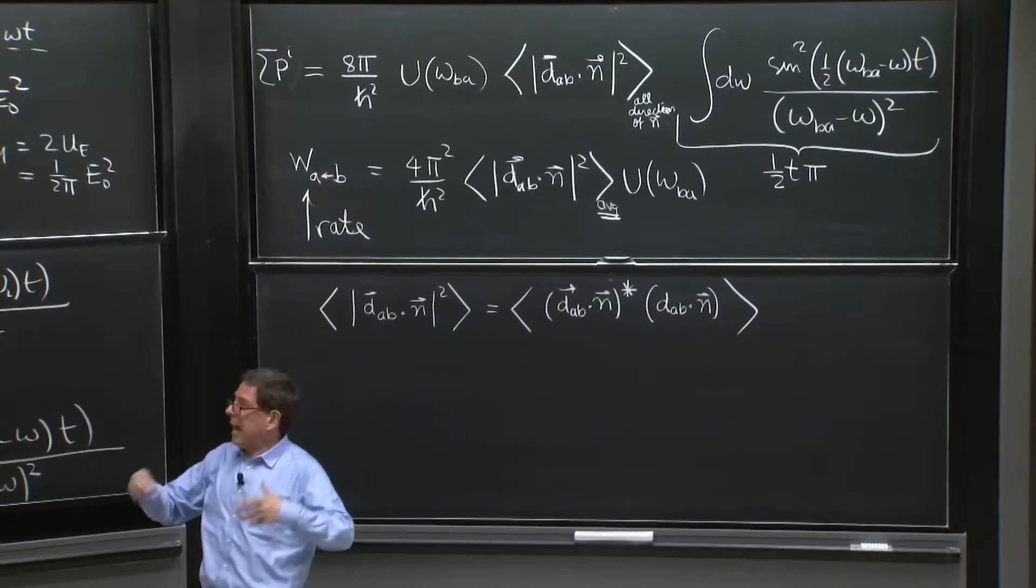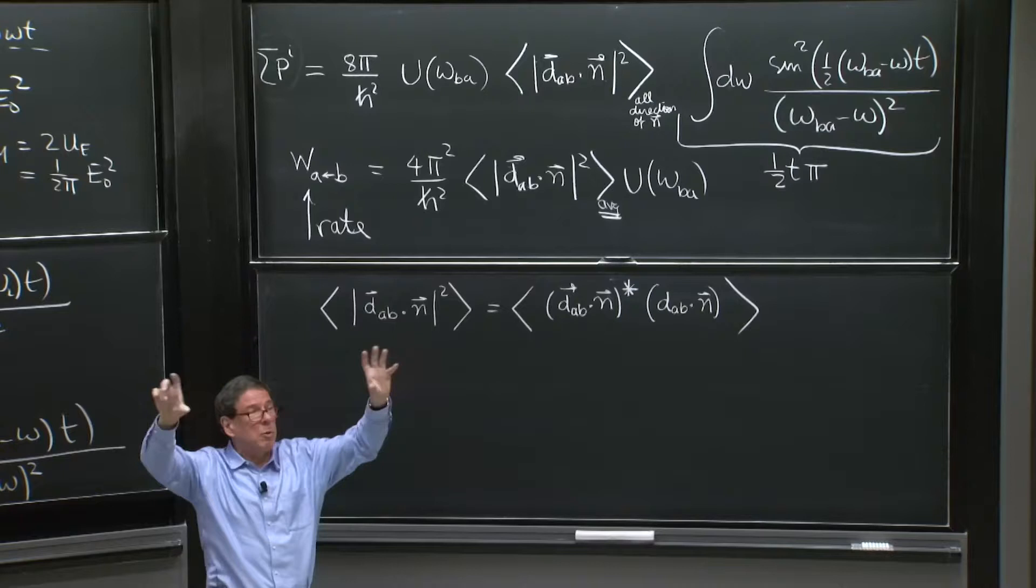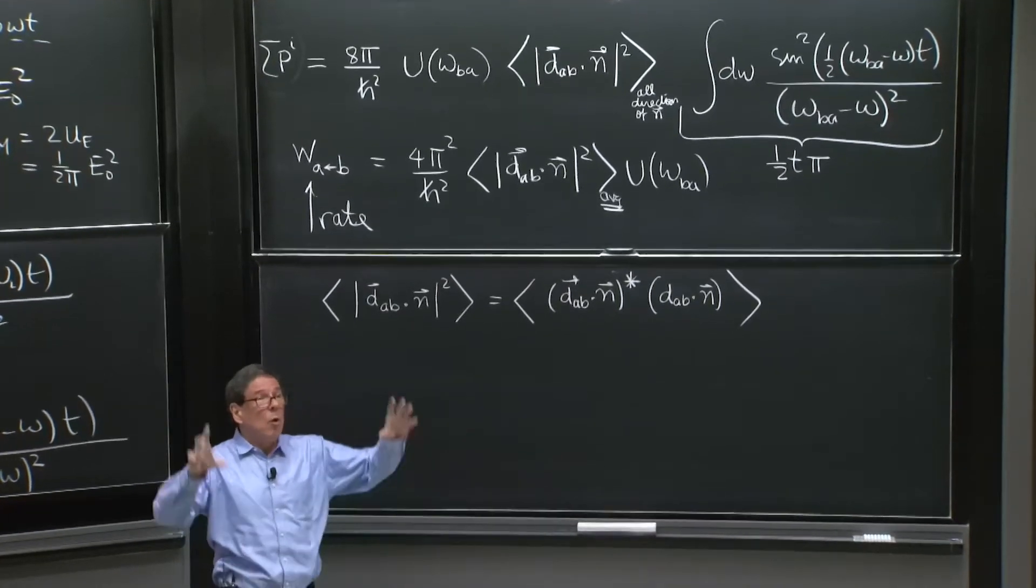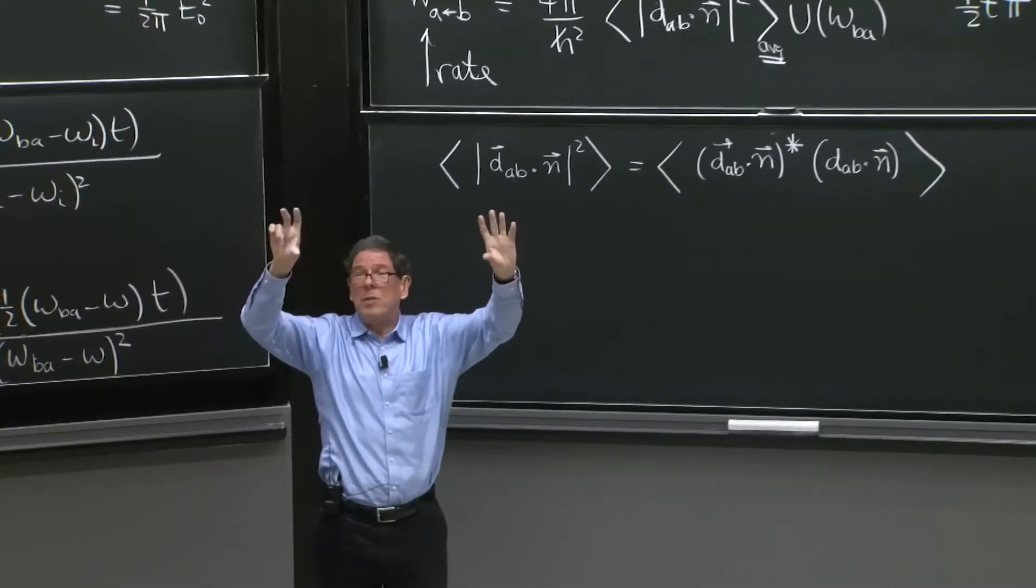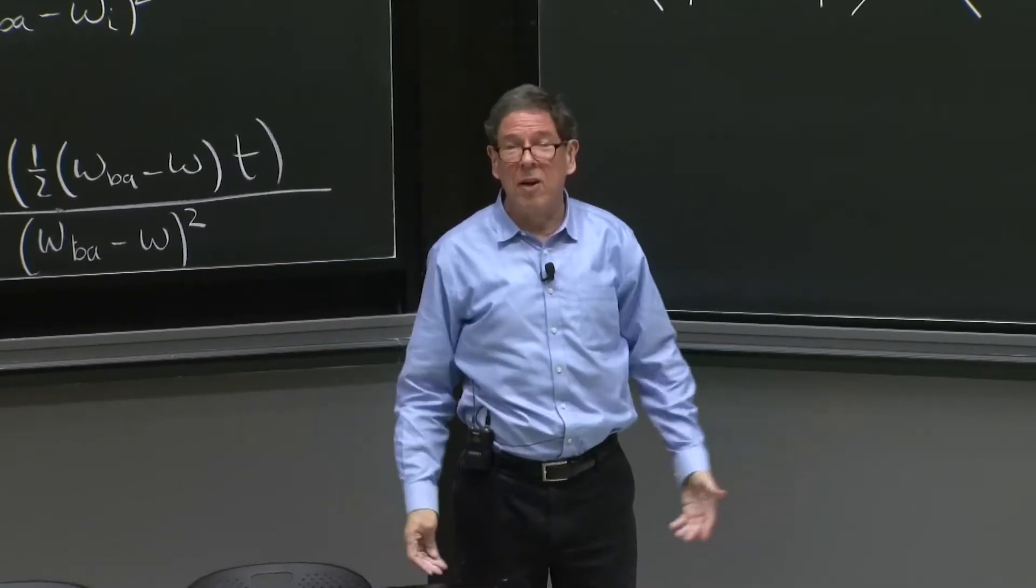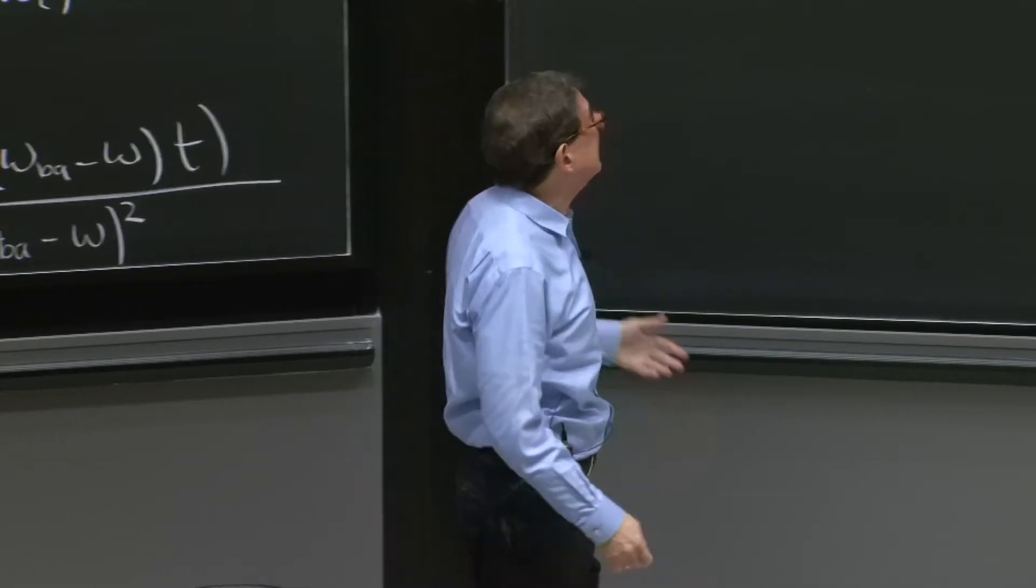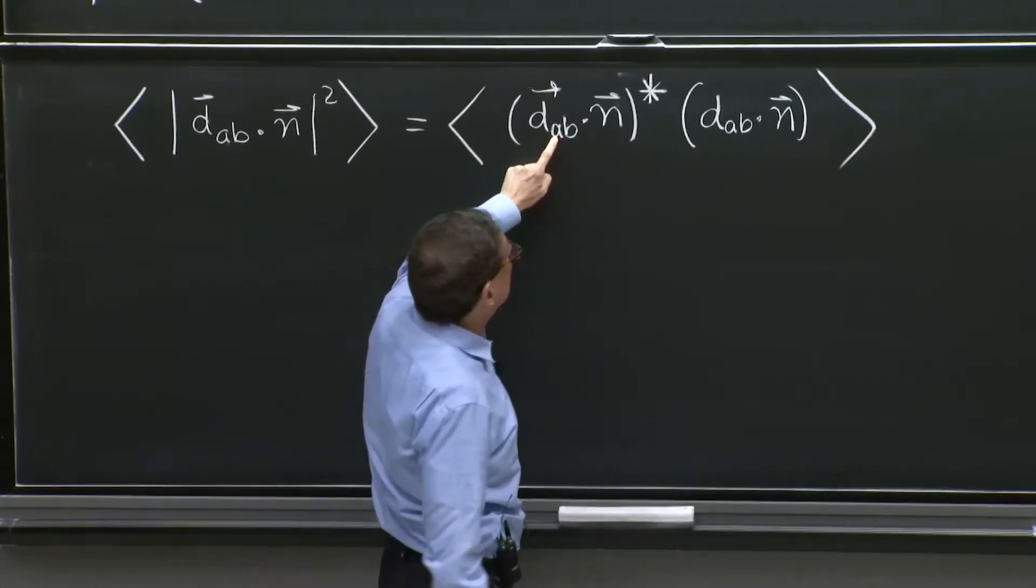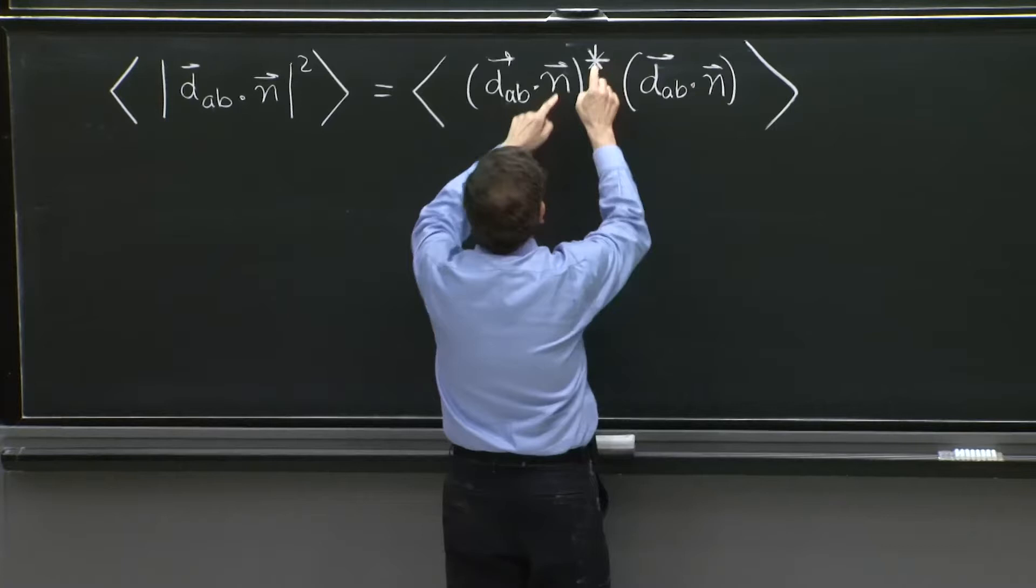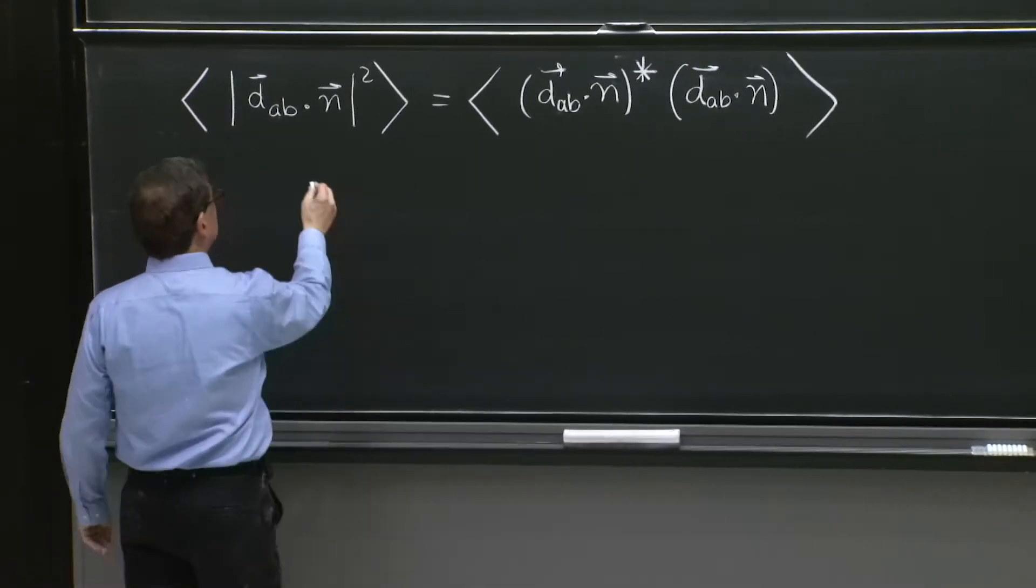So it's x, y, and z. And each one has matrix elements between states A and B. And with matrix elements between states A and B that are complex wave functions, this can be complex numbers. So in general, this d_ab is a complex vector. And the star is necessary here.